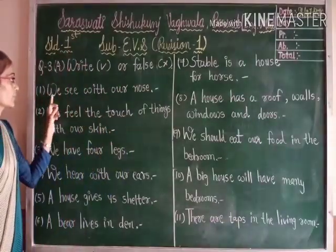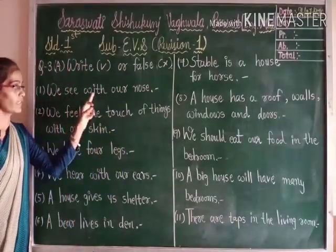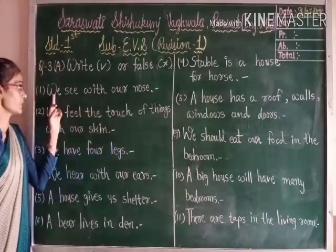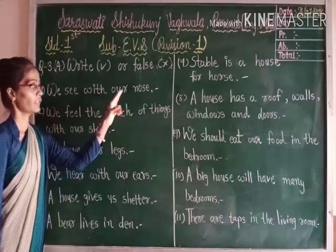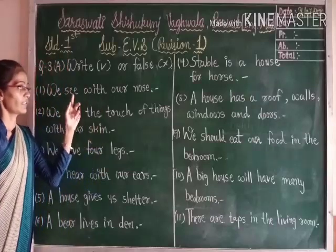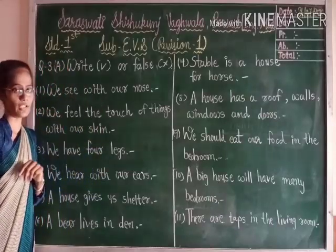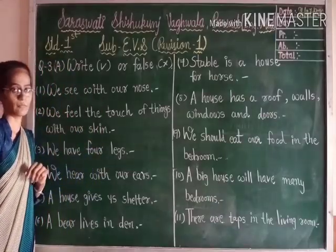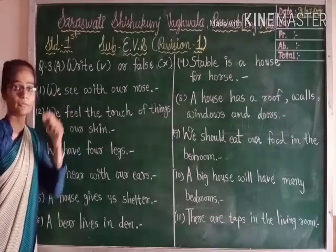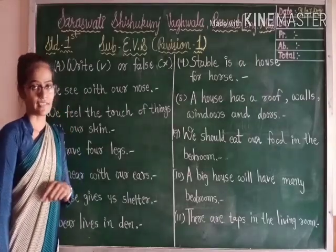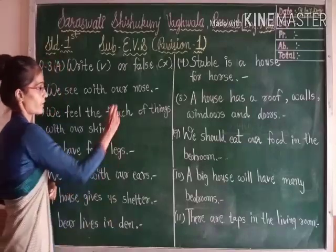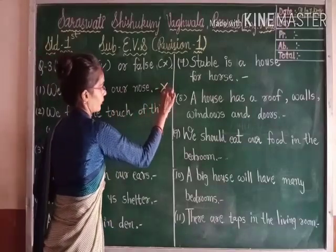Number 1: we see with our nose. Now tell me, is it true or false? It is false. Why is it false? Because we see with our eyes, not our nose. So this sentence is wrong, and we will put a cross mark.